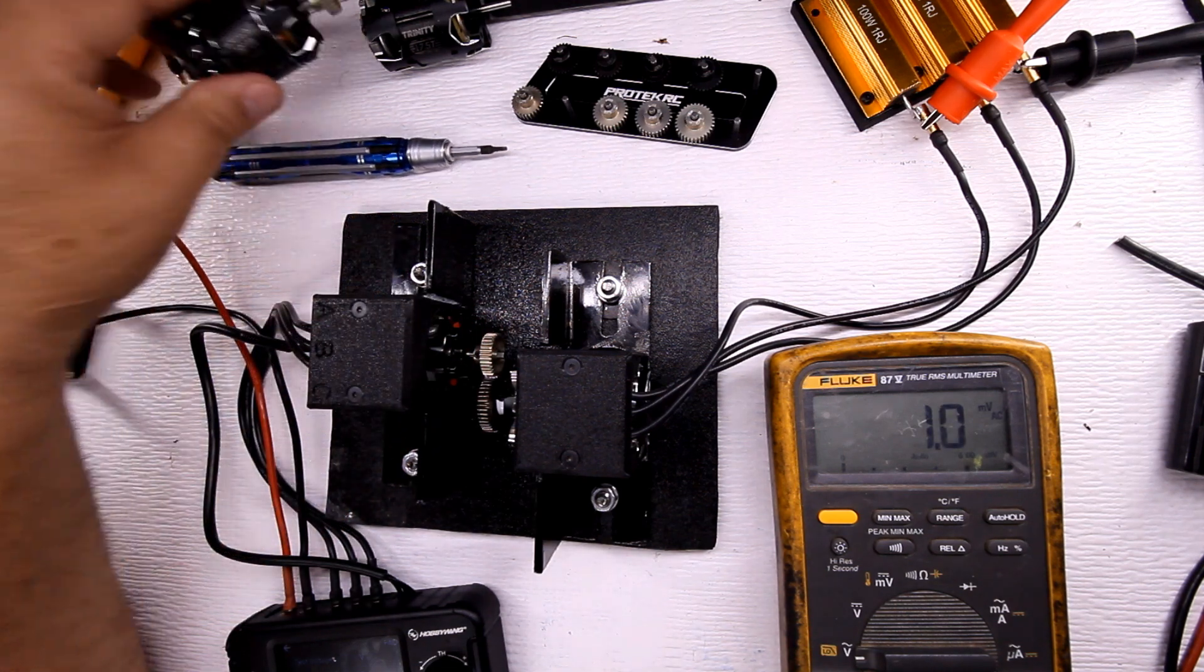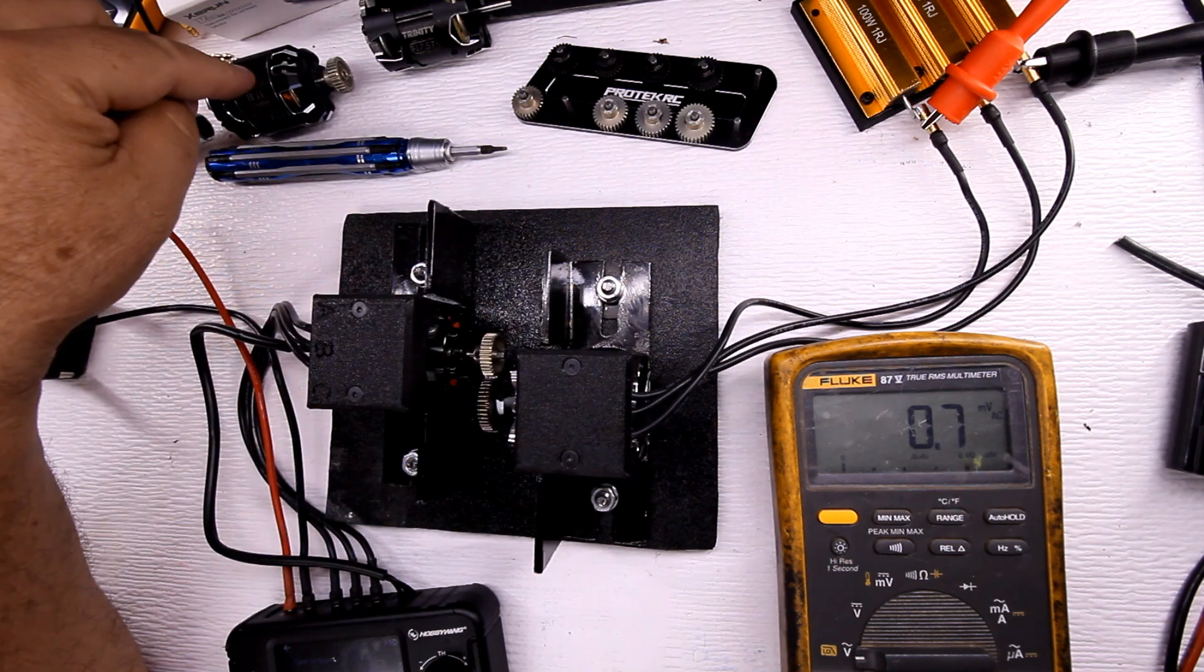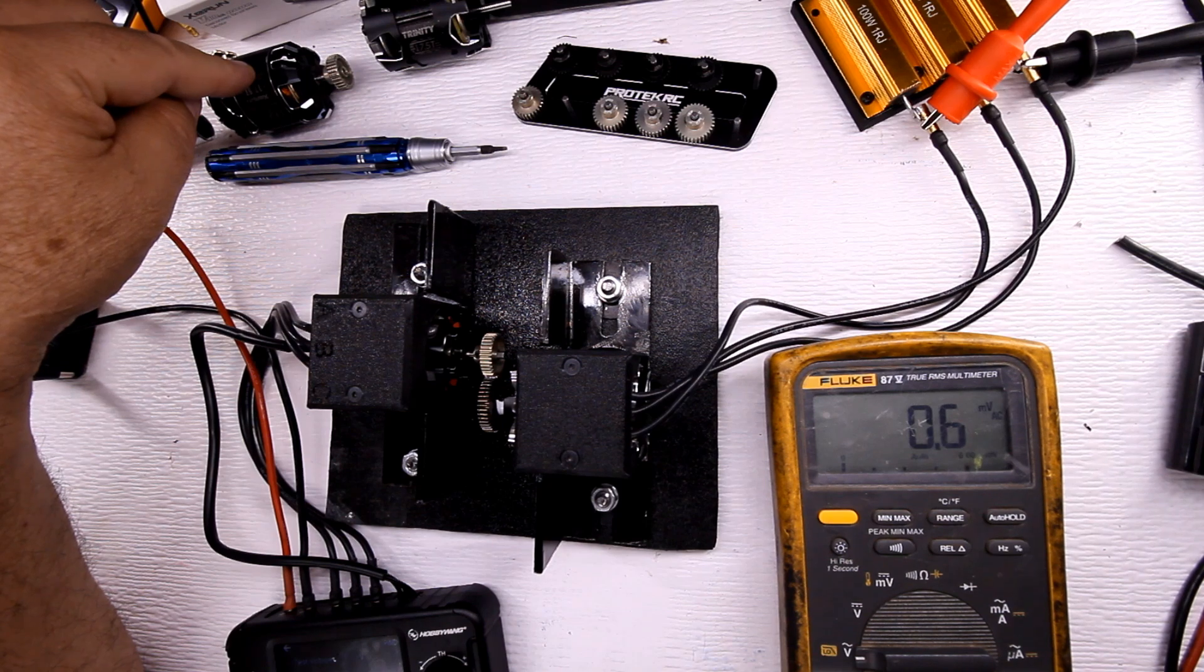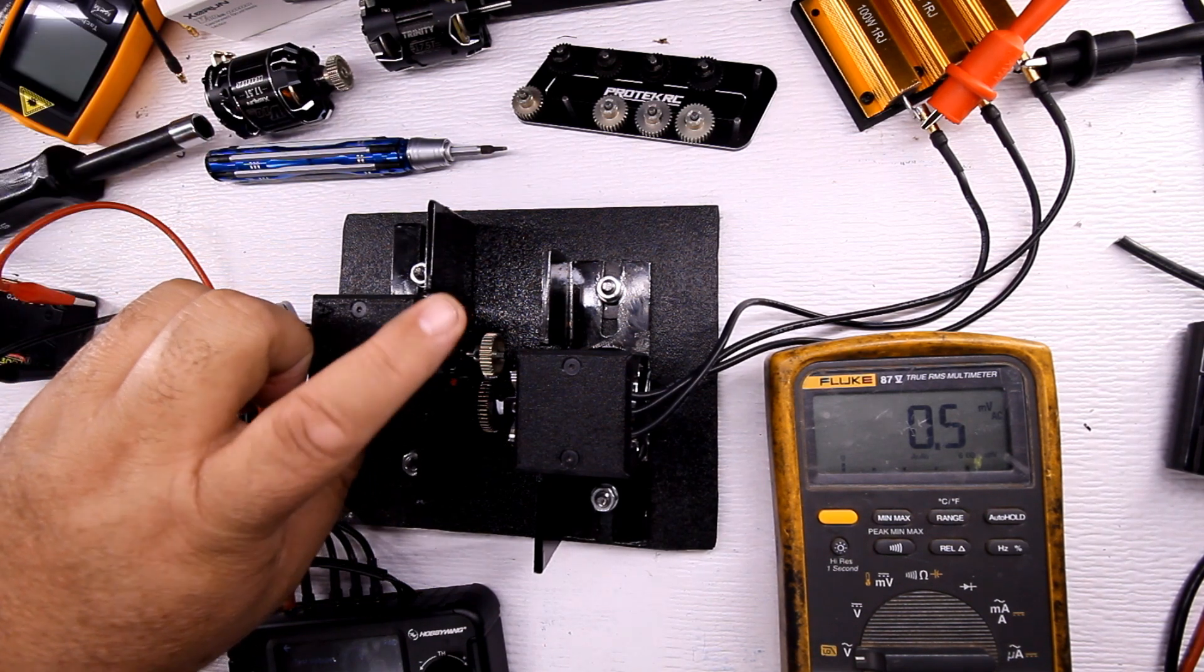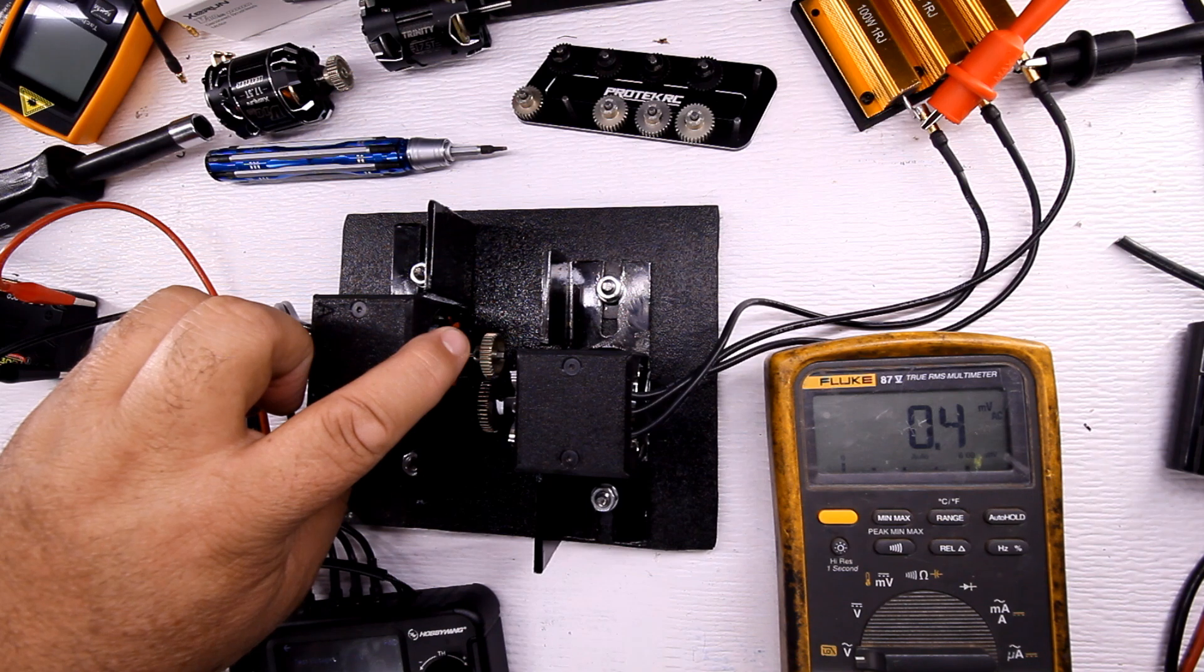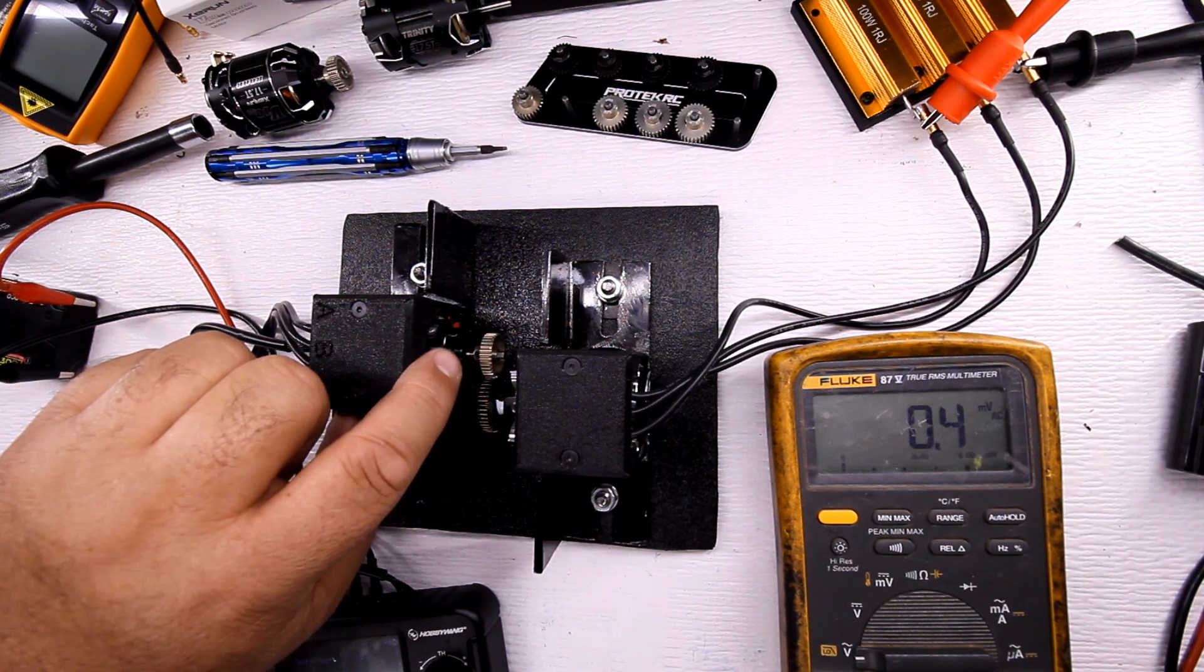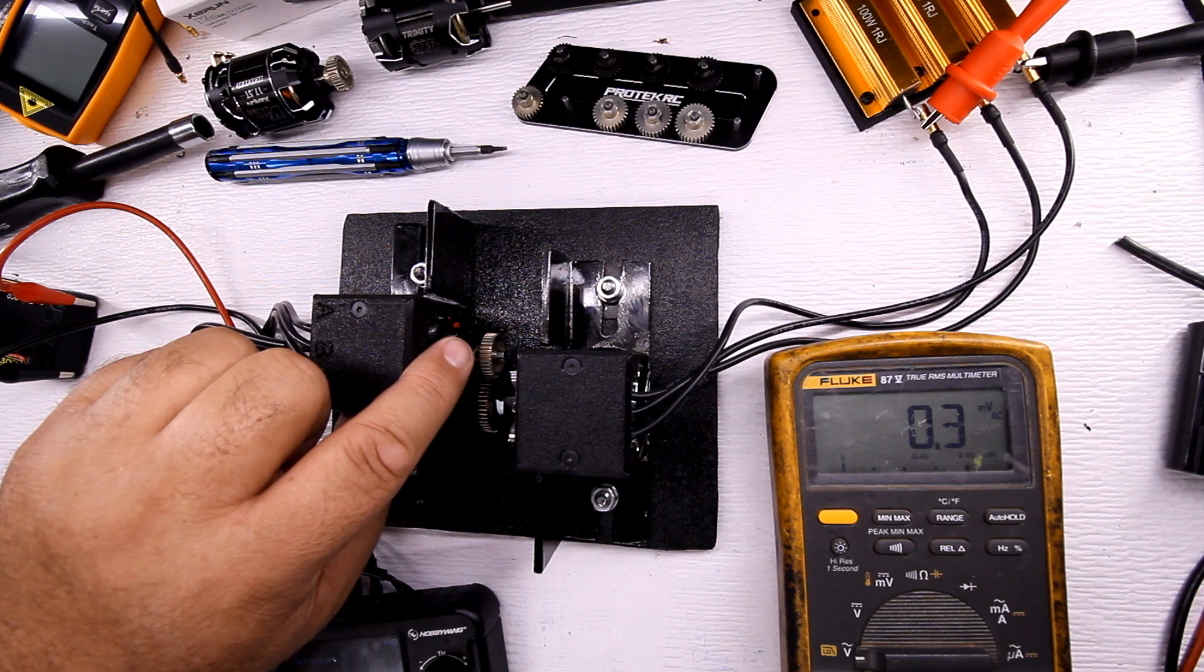Now the Hobbywing, its amp draw was approximately 9.14, where the amp draw on this one is a 9.63. So the big thing is how much was this one, how hard was this one really working?